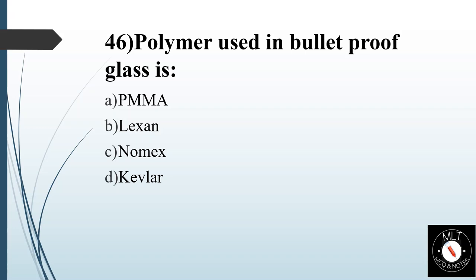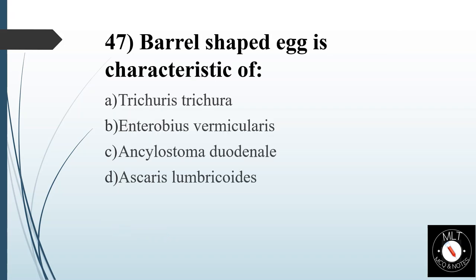Forty-sixth question. Polymer used in bulletproof glass is? Option A: PMMA. Option B: Lexan. Option C: Nomex. Option D: Kevlar. Answer is Option B: Lexan.